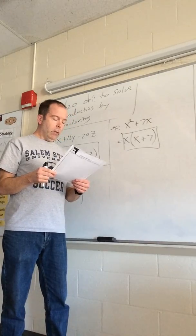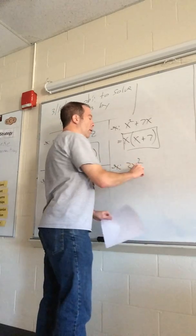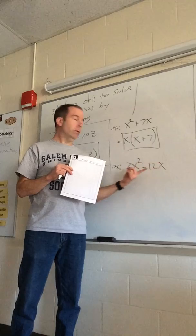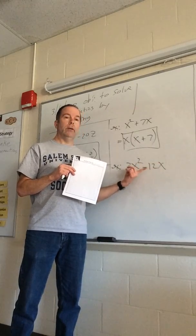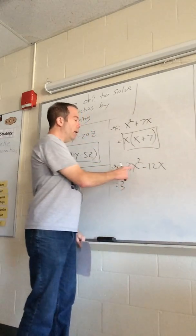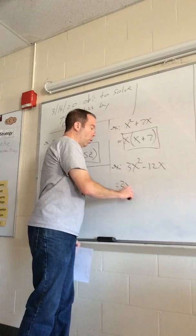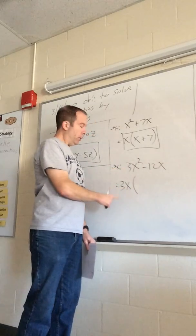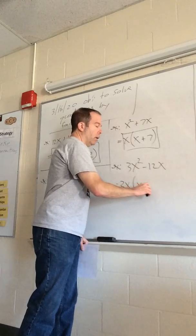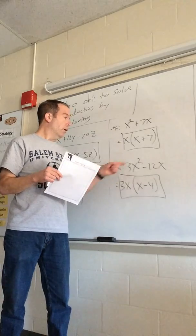Let's look at something a little more challenging, where we're really looking at numbers and variables together: 3x² − 12x. We look at the numbers first — the number that goes into both 3 and 12 is 3. Then we look at the x's: a pile of two and a pile of one — we can take out 1x. So we factor out 3x. Three x times what makes 3x squared? That's x. And 3x times what makes negative 12x? That's minus 4. So our factors are 3x(x − 4).